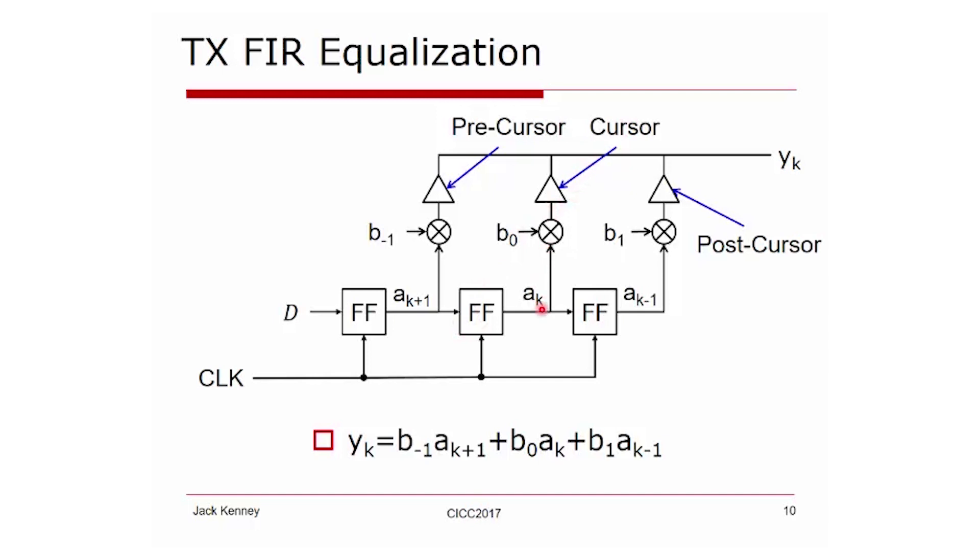It multiplies a bit AFK and has your highest value. You have a precursor tap AFK plus one, and you have a post cursor tap AFK minus one. On the bottom, we see the difference equation associated with this transmit FIR.